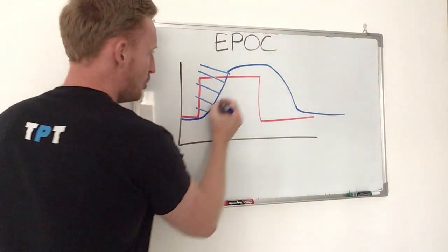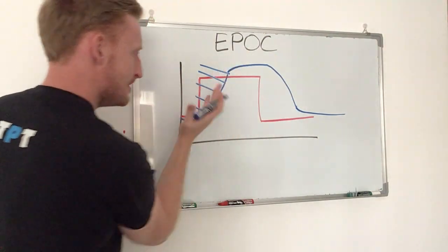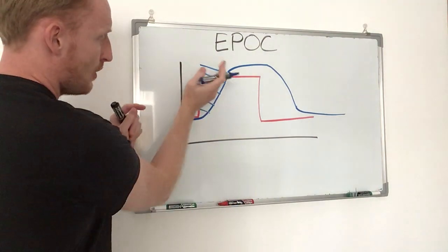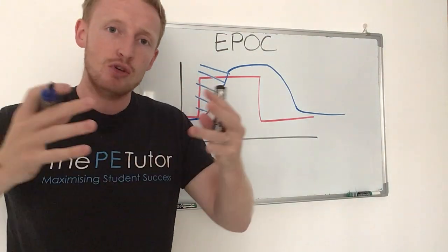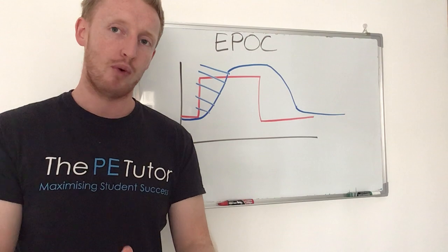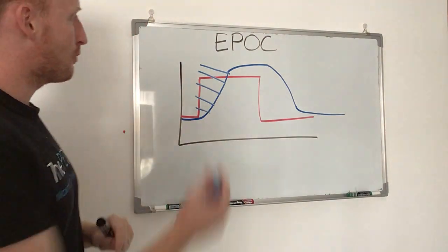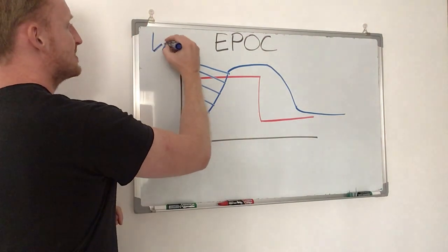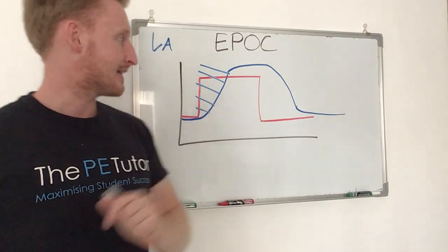So in the absence of oxygen, our body, for this first period of exercise, has to use anaerobic energy pathways. And anaerobic energy pathways produce lactic acid.